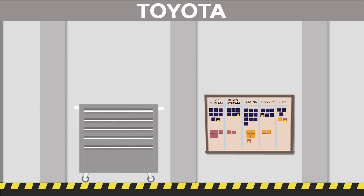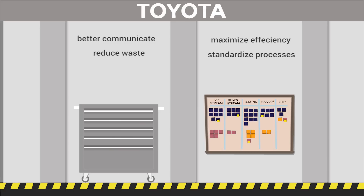The visual nature of using a card or billboard allows teams to better communicate with one another, reducing waste, maximizing efficiency, and standardizing both instructional signals and processes. The result: Toyota became the largest, most profitable auto manufacturer in the world.